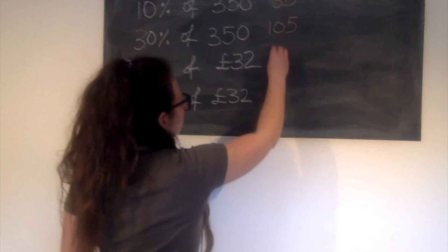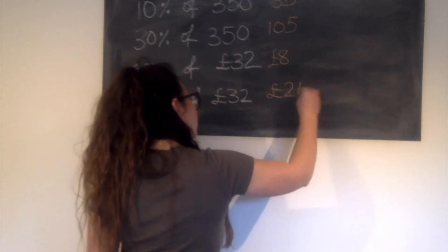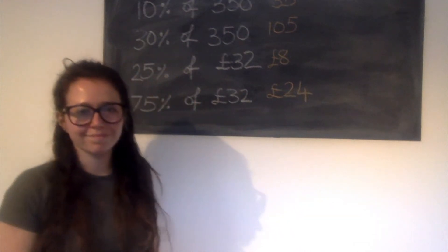25% of £32 is £8. And 75% is actually 3 times that amount, so it's £24. Welding a few up.